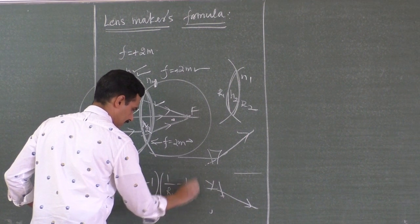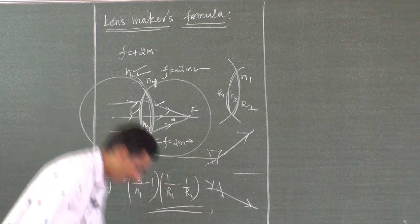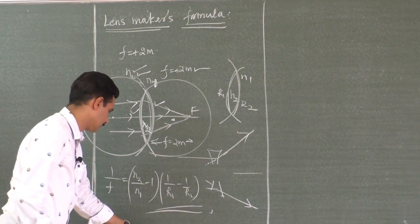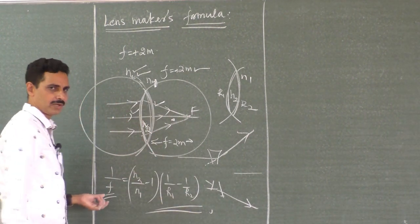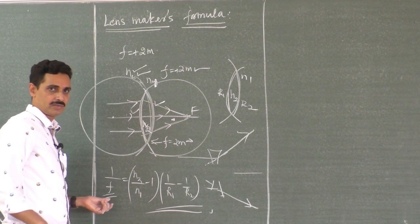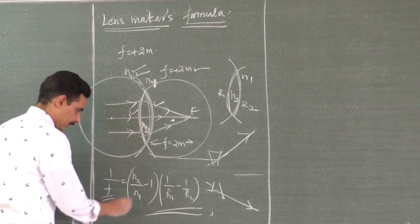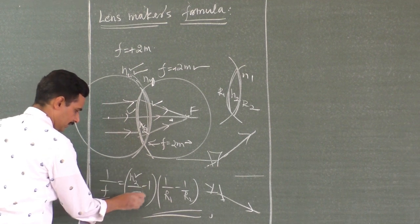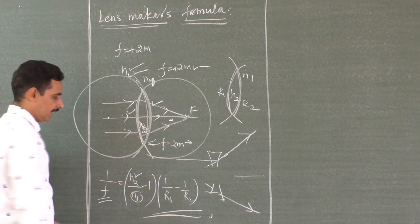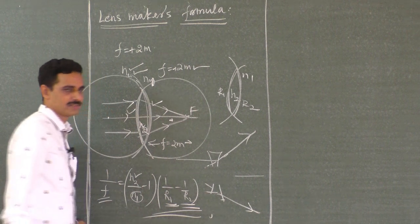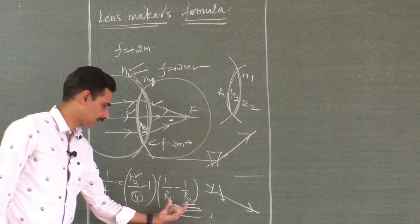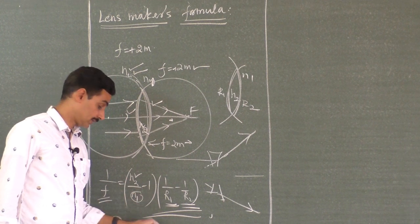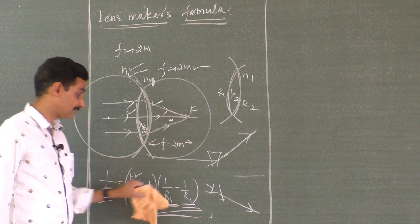This is called lens maker's formula. The doctor will prescribe the focal length you have to wear to correct your image formation. You select the surrounding medium and the material. The lens maker will create a curvature for both surfaces and prepare the lens. That is why it is called lens maker's formula. This is what you have to get at the end of the derivation.